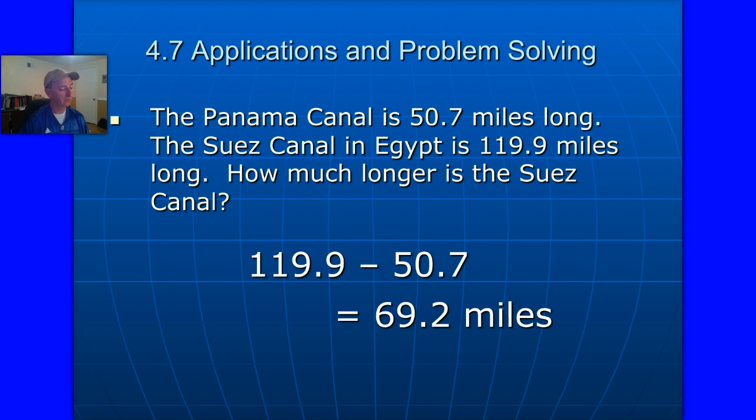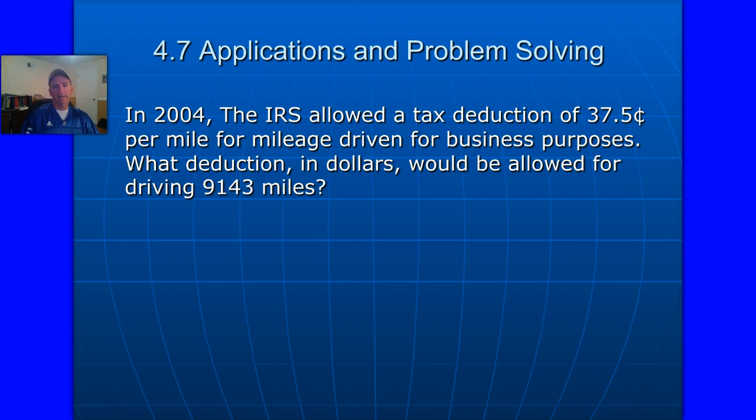Let's continue on to page 14 in your notes. We have a question that says, the IRS allowed a tax deduction of 37.5 cents per mile for mileage driven for business purposes. What deduction in dollars would be allowed for driving 9,143 miles? Well, one thing that this book does that you just need to be aware of, that this particular notation is in cents. That's 37.5 cents, so it's 37 pennies and half a more penny right there. What we're used to seeing is dollar signs where it would have been 0.37, about 37 cents.